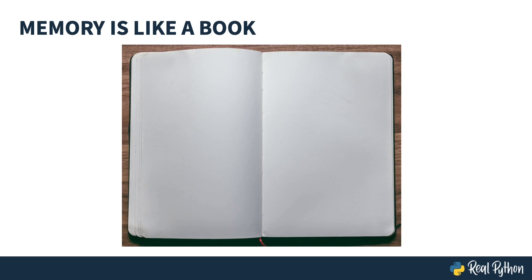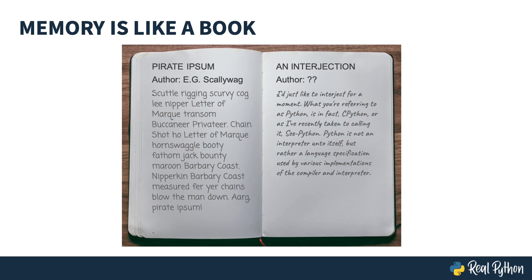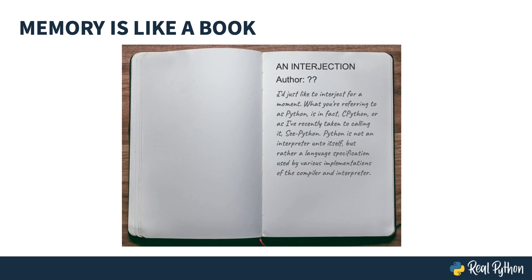Memory is like an empty book intended for short stories. Eventually, different authors will come along and write their own stories. Since they aren't allowed to write over each other, they must be very careful about which pages they write in. These authors are like the processes writing data, or stories, into our memory book. The memory manager decides where in the book each author is allowed to write. After a while, some stories are no longer relevant, so from time to time the memory manager calls in his buddy, the garbage collector, to erase old stories that nobody's reading. This way, there's room in the book for new stories.